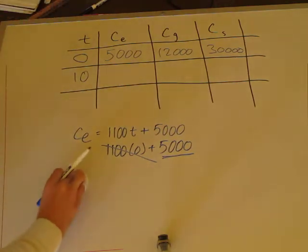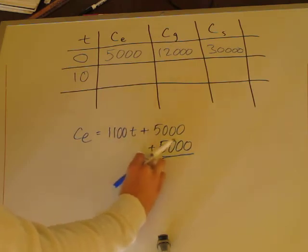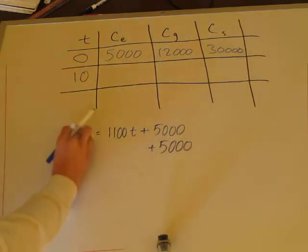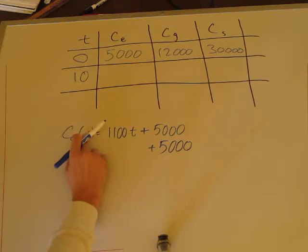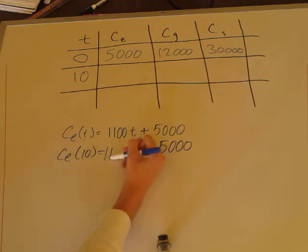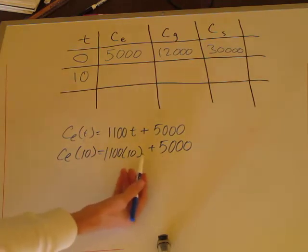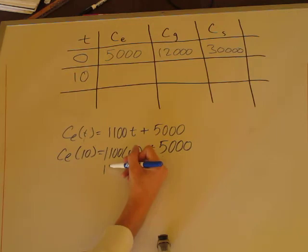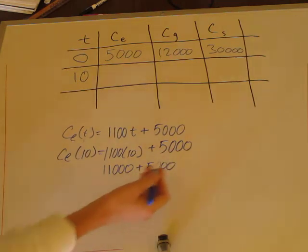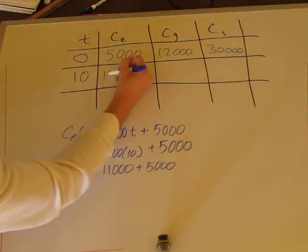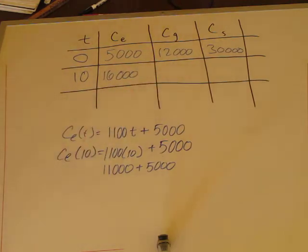Now let's look at after 10 years. For the cost of electric: Ce(10) = 1100 times 10, which is $11,000, plus $5,000, giving us $16,000 total. That's the total cost for the electric system after 10 years.